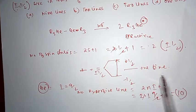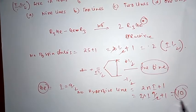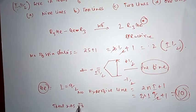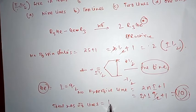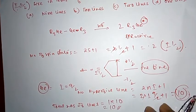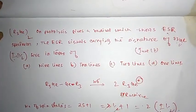The total number of lines in the EPR spectrum will be 1 into 10 equal to 10. Therefore the correct answer to this question will be option B, ten lines.